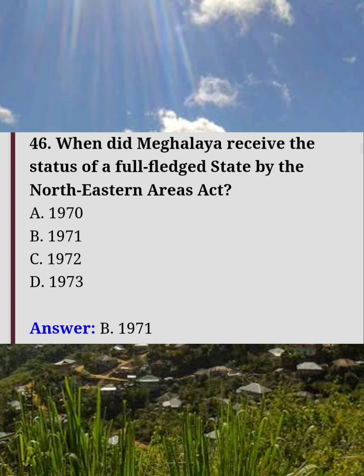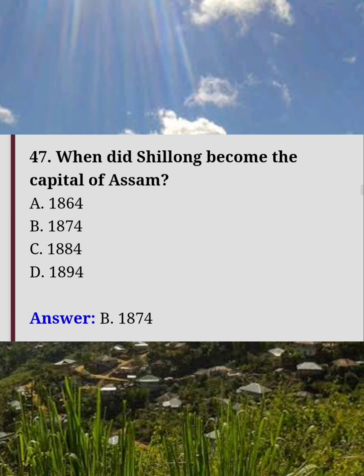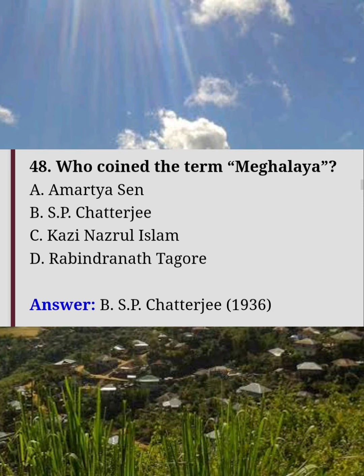When did Meghalaya receive the status of a full-fledged state under the North Eastern Areas Act? Answer B: 1971. When did Shillong become the capital of Assam? Answer B: 1874. Who coined the term Meghalaya? Answer B: S.P. Chatterjee.